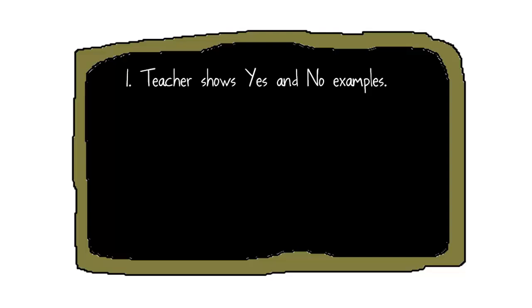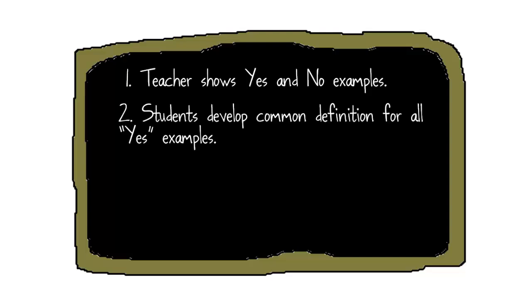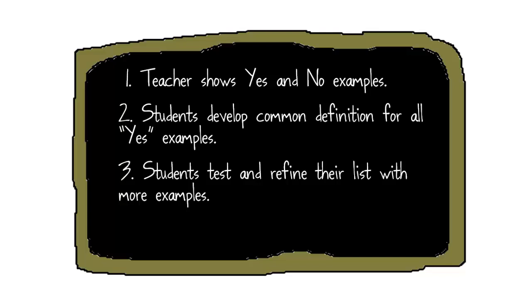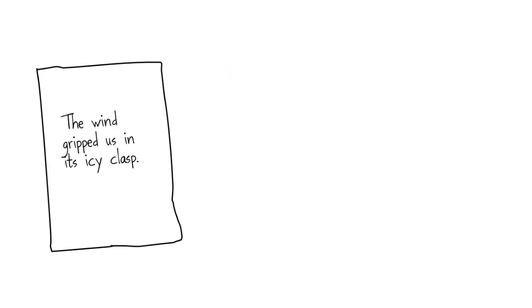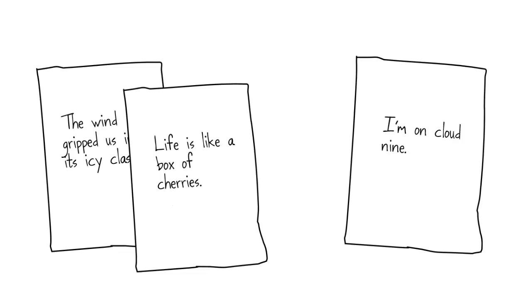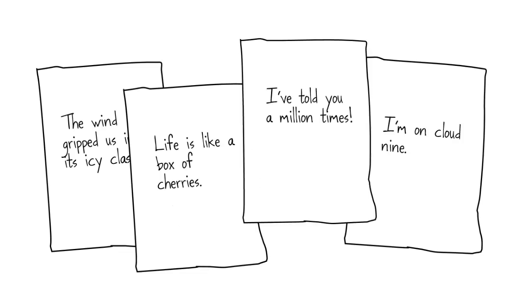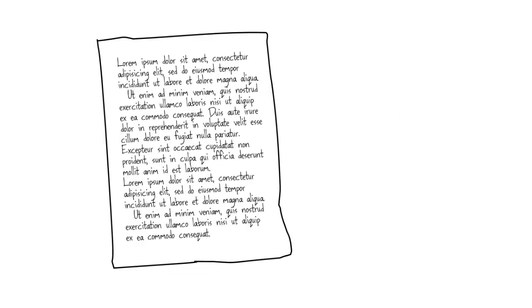So now I've completed my first three steps of concept attainment: yes and no examples, students develop a definition, and then they test and refine their definition by looking at more examples and seeing if they hold up. The final step is to have students apply their learning in a new task. This can be something really simple, like having them come up with new examples of figurative language. Or, if they're currently working on a piece of writing, I might ask them to go into their drafts and find three places to add figurative language.